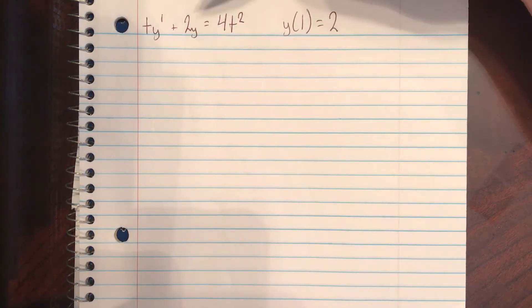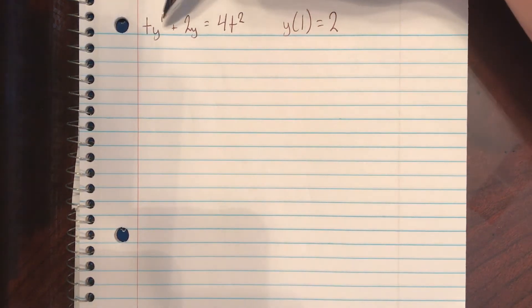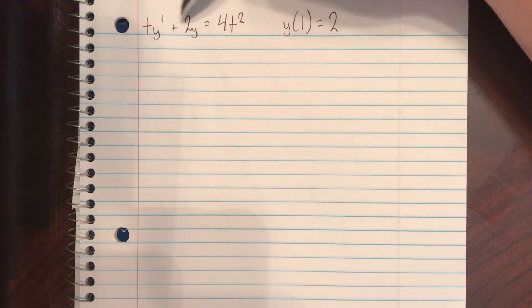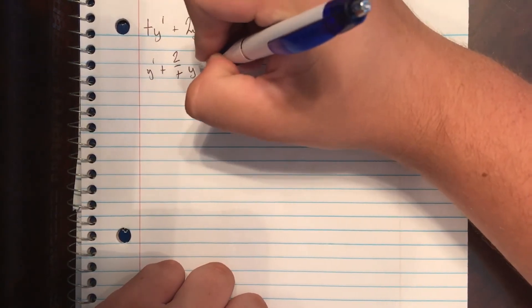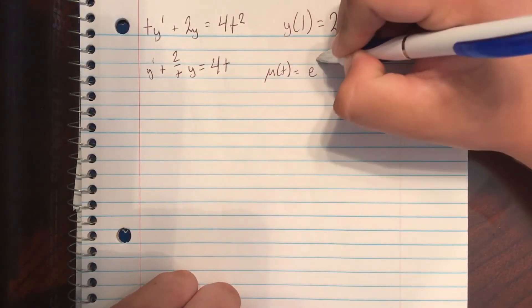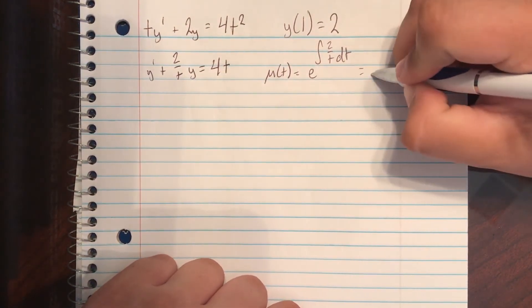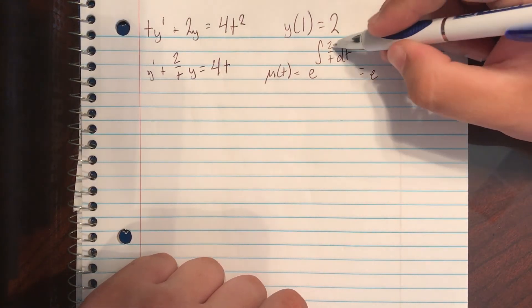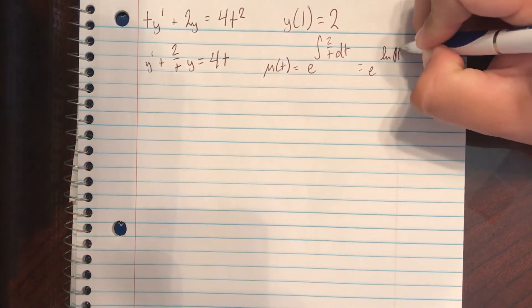In this problem we have ty prime plus 2y is equal to 4t squared. What we want to do is always have y prime isolated — we don't want any function or constant next to it. So we're going to divide all sides by t. This is going to get us y prime plus (2 over t) times y is equal to 4t. And now we can find the mu of t. So this is going to be e to the integral of 2 over t dt.